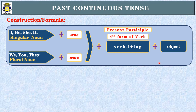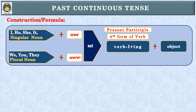This is the construction of a simple sentence. We can call it a positive sentence, affirmative sentence, or assertive sentence. If we want to change it into a negative sentence, we'll just write 'not' after 'was' or 'were' in Past Continuous Tense. If we want to change it into interrogative, we'll write 'was' or 'were' at the beginning of the sentence and put a question mark at the end. This is the construction of Past Continuous Tense — simple, negative, and interrogative sentences.